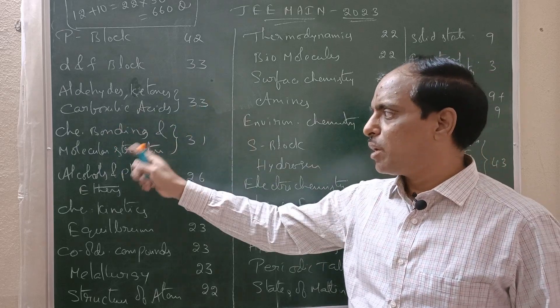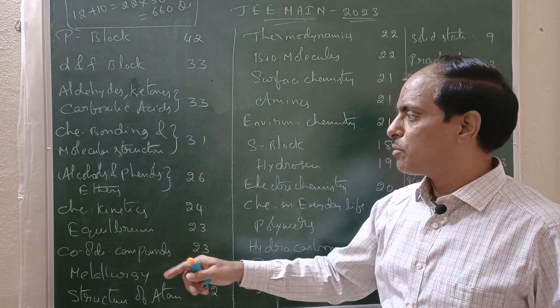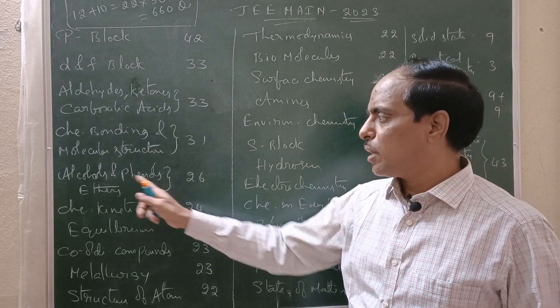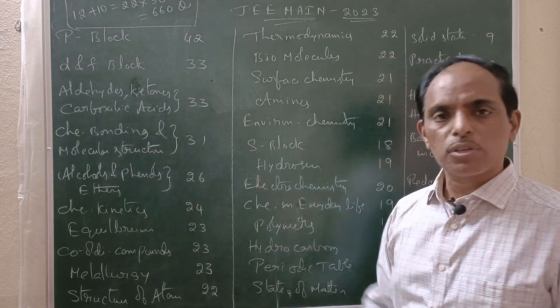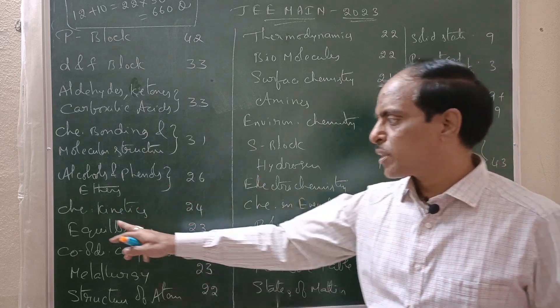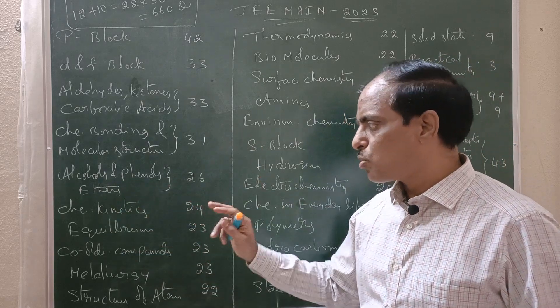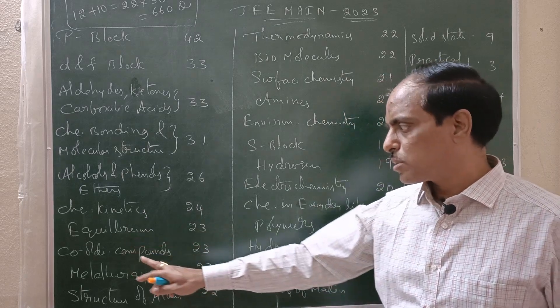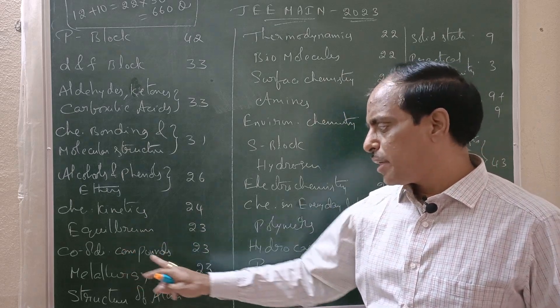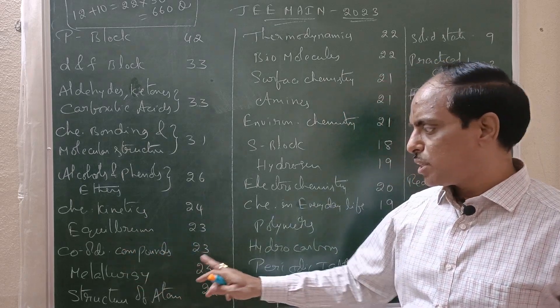Chemical bonding and molecular structure: 31. Alcohol and phenols: 26. Chemical kinetics: 24. Equilibrium: 23. Coordination compounds: 23.